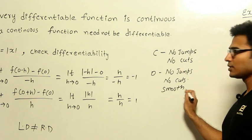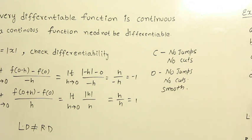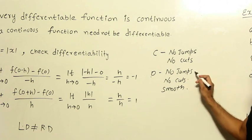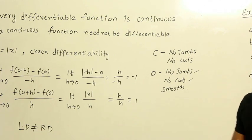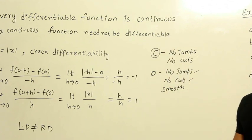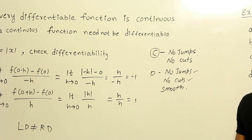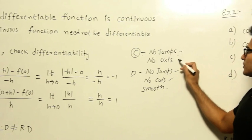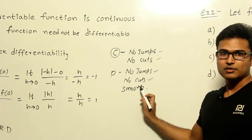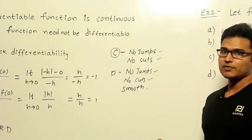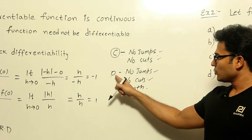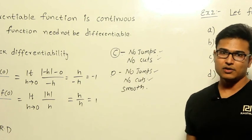Now if you observe it, if a function happens to be differentiable, then already there are no jumps and no cuts. That means it is continuous. But if a function happens to be continuous, then we know there are no jumps and no cuts, but we don't know whether it is smooth or not. Therefore, every continuous function need not be differentiable.